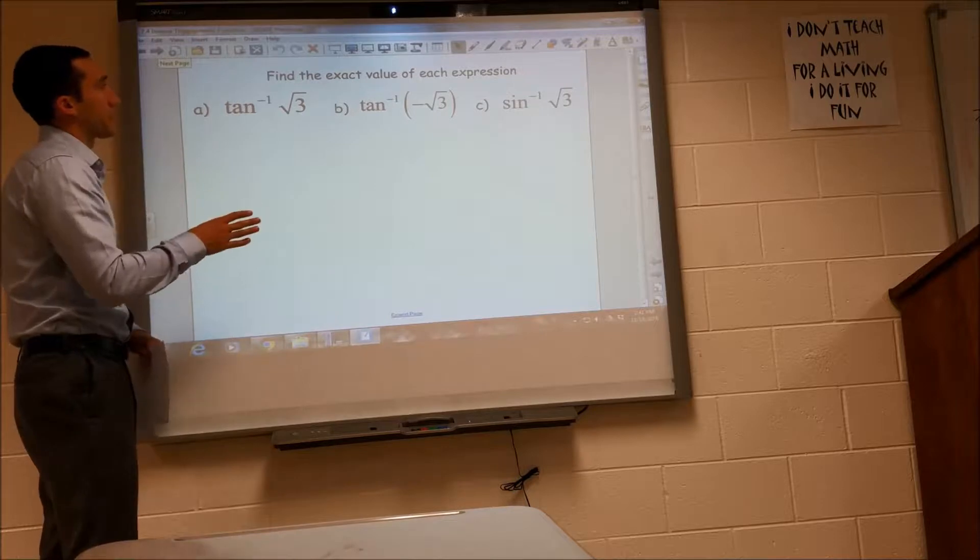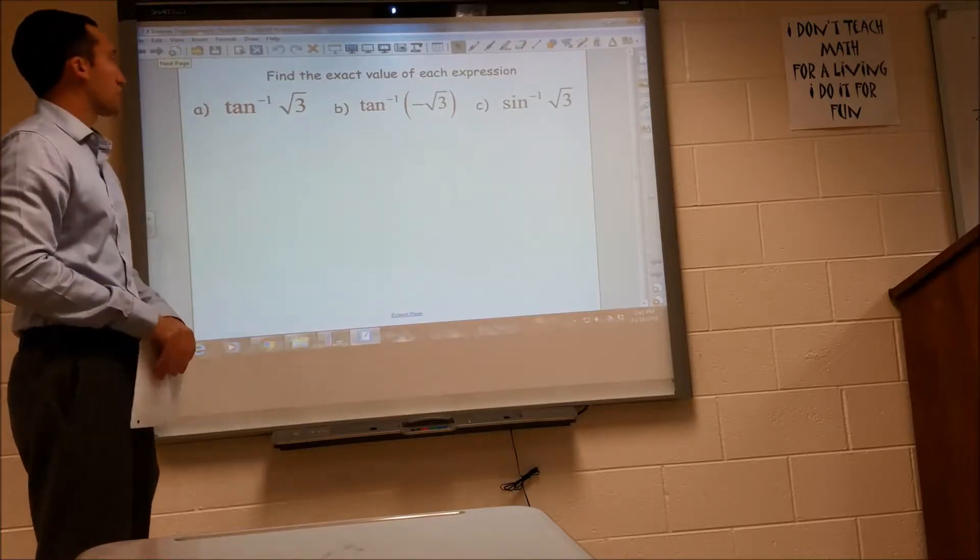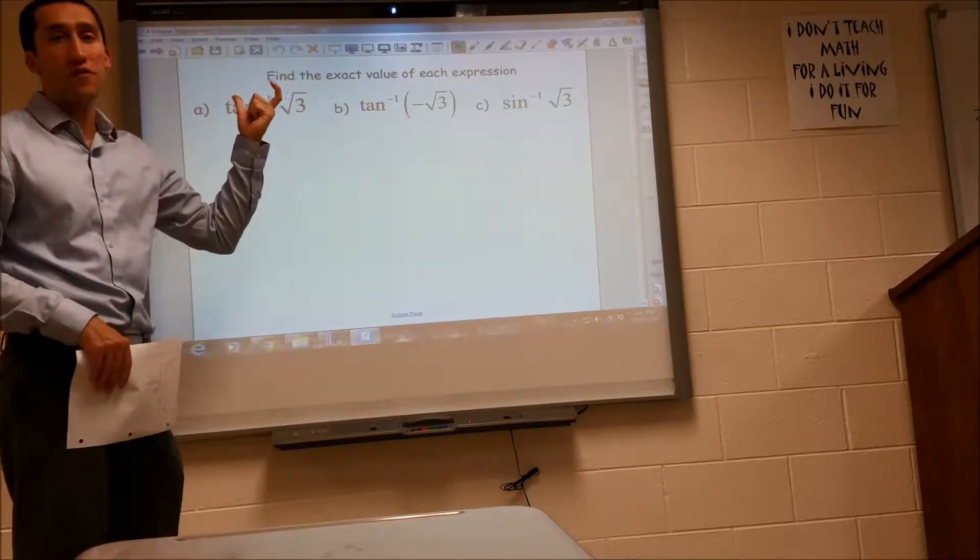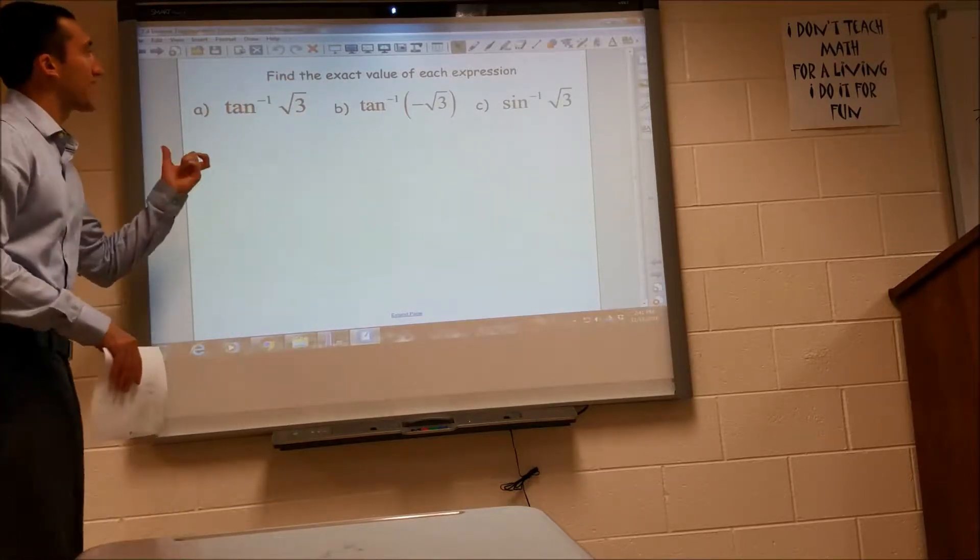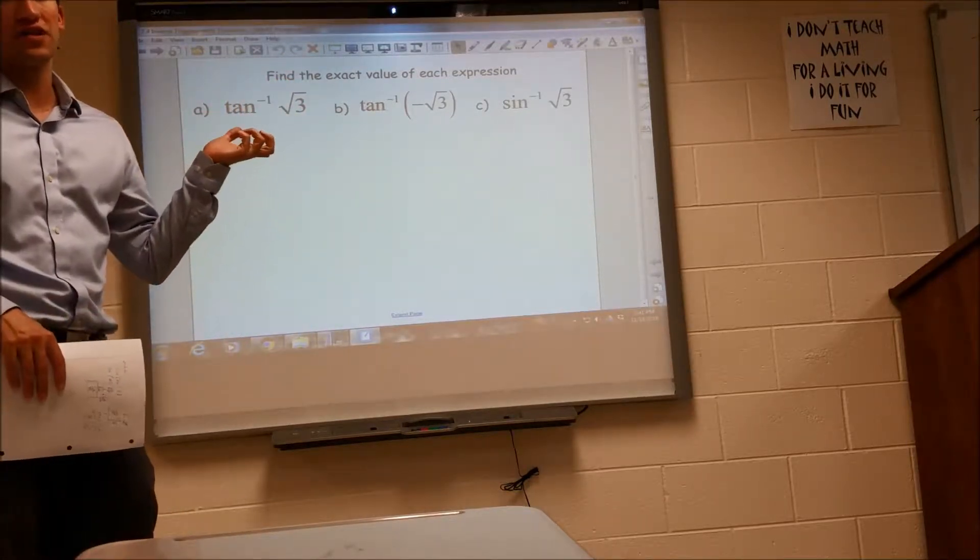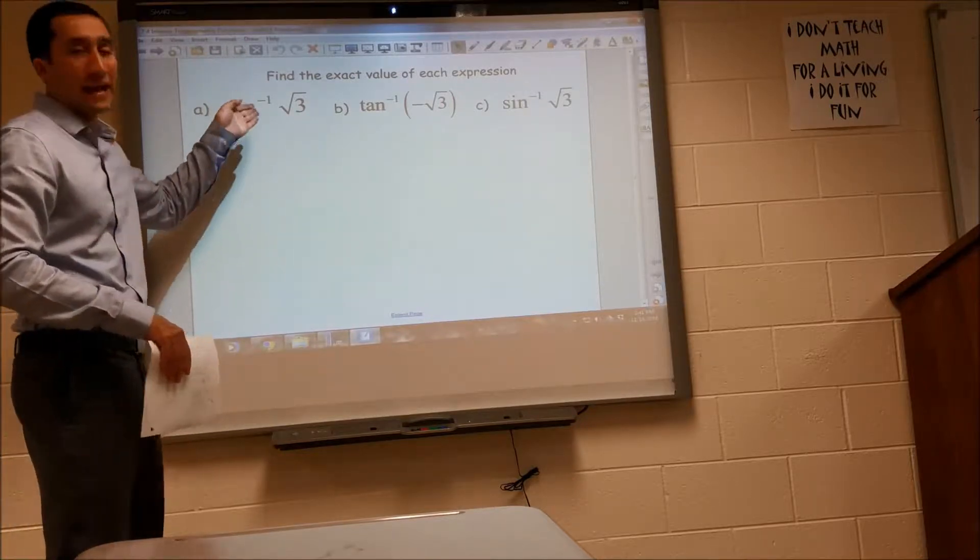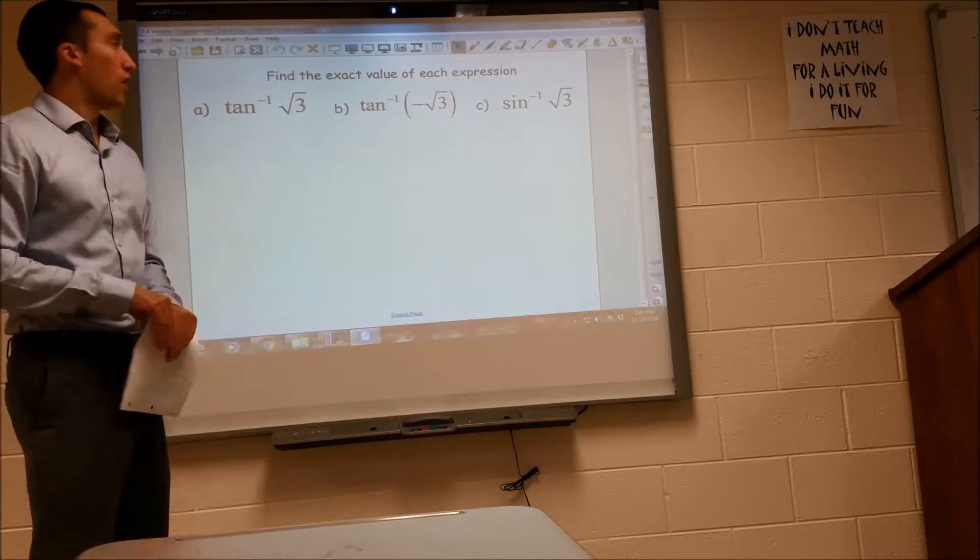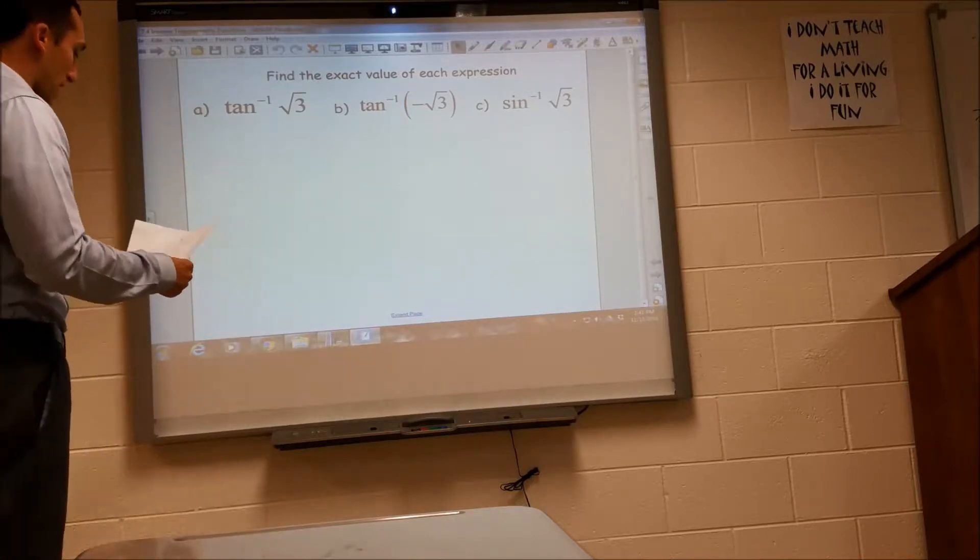They want us to find the exact value of each of these expressions. This tangent raised to the negative 1 means it wants the inverse tangent. Basically what the inverse function of trig functions does is it's telling us what angle gives me radical 3 for tangent. So if you don't know the angle right off the top of your head,